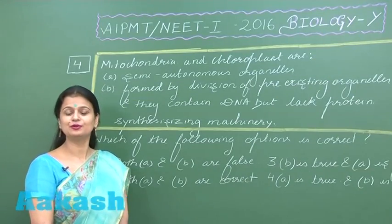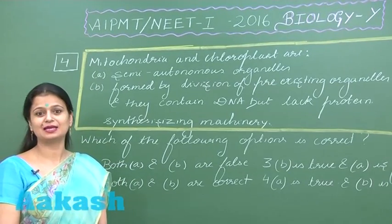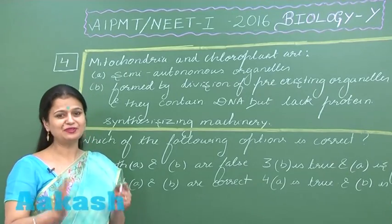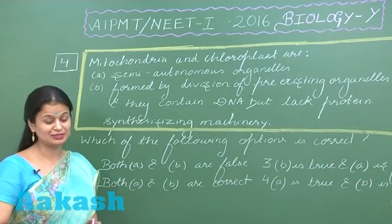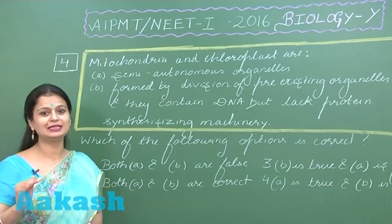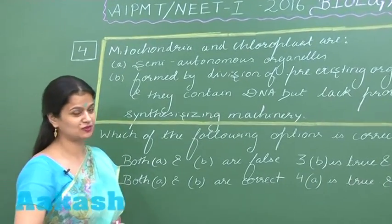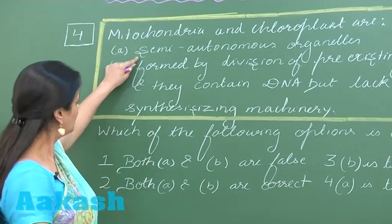Now let's discuss question number 4. Mitochondria and chloroplasts have DNA as well as ribosomes, so they can make proteins. Some of the proteins are formed by mitochondria and chloroplasts, so they are not fully dependent on nuclear DNA. What do you call such type of nature? You call this nature semi-autonomous.